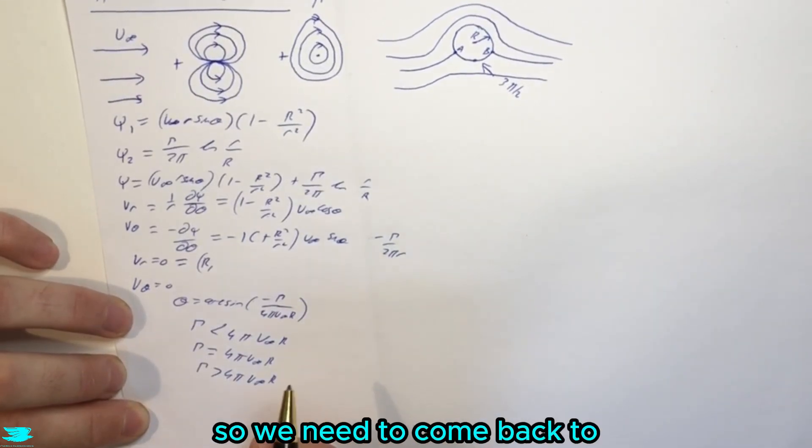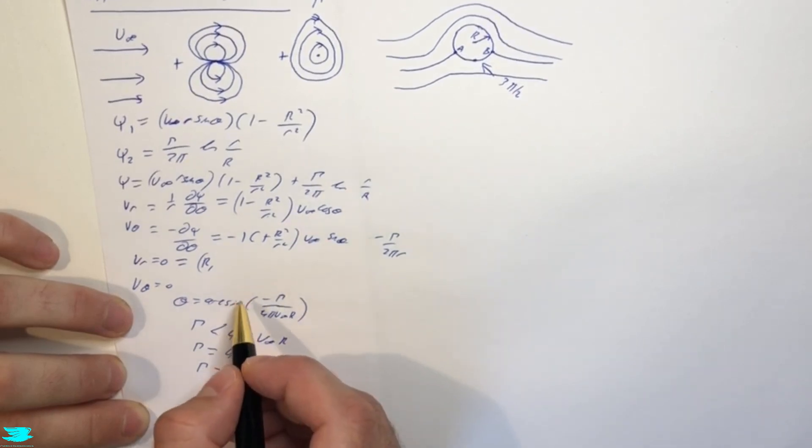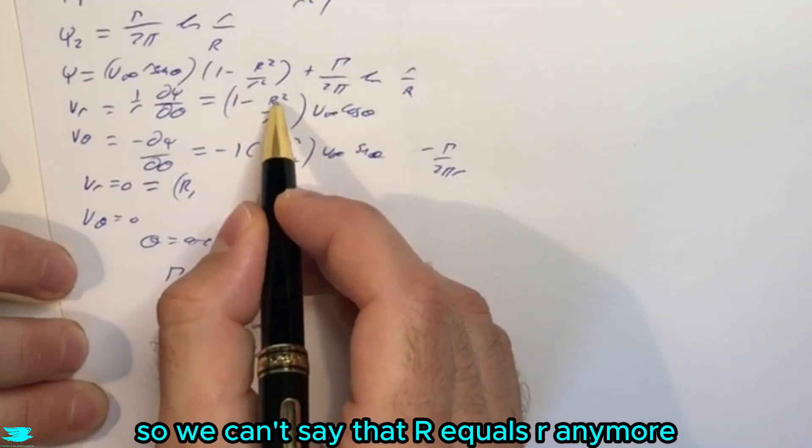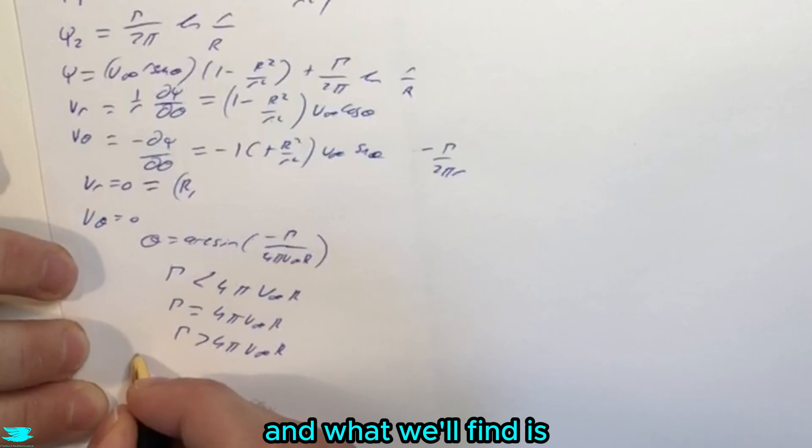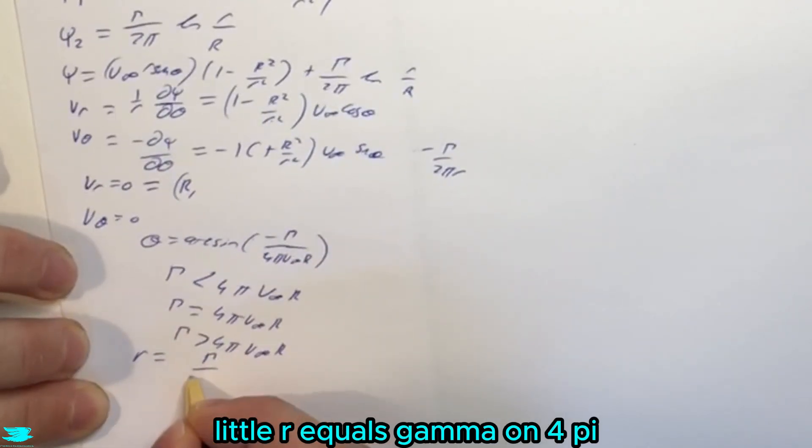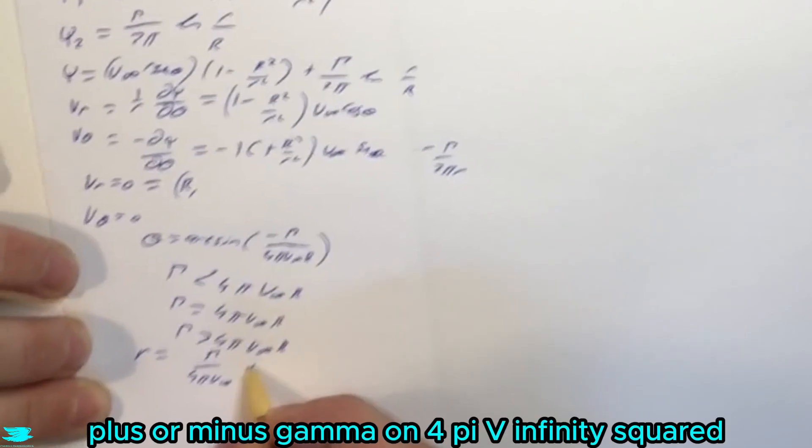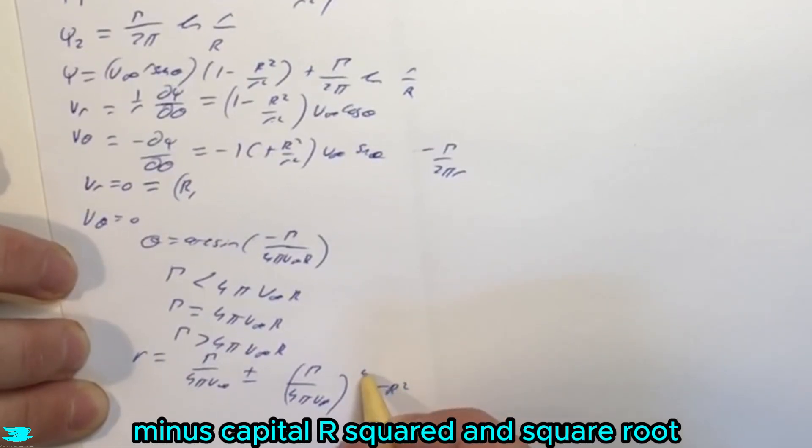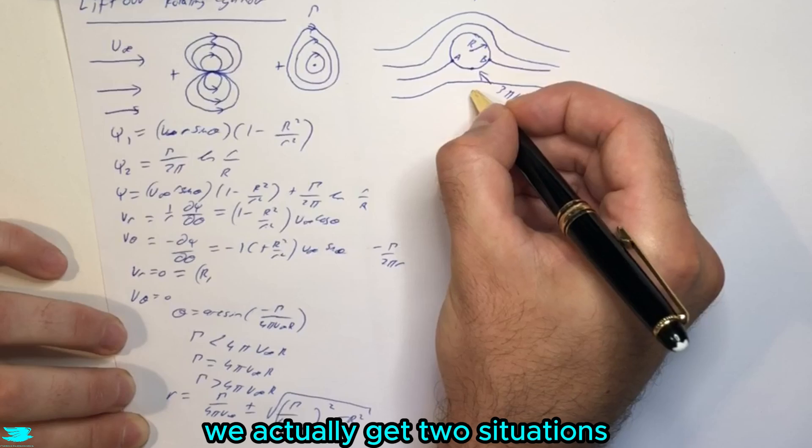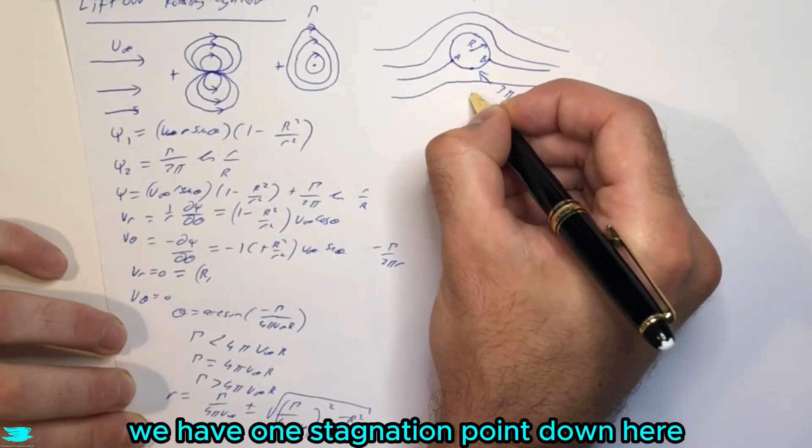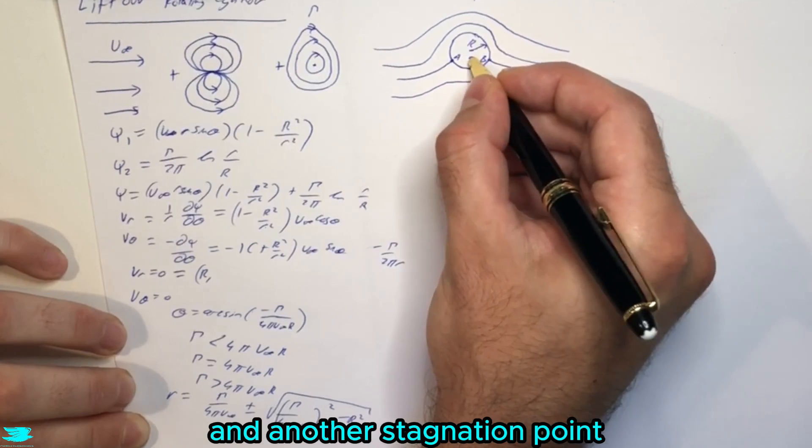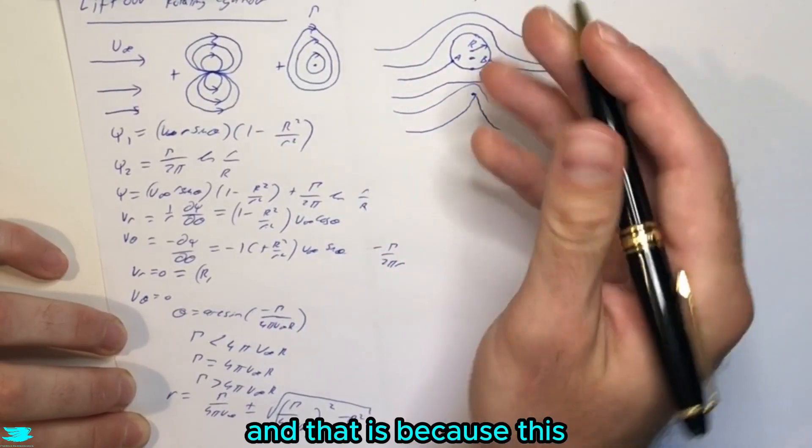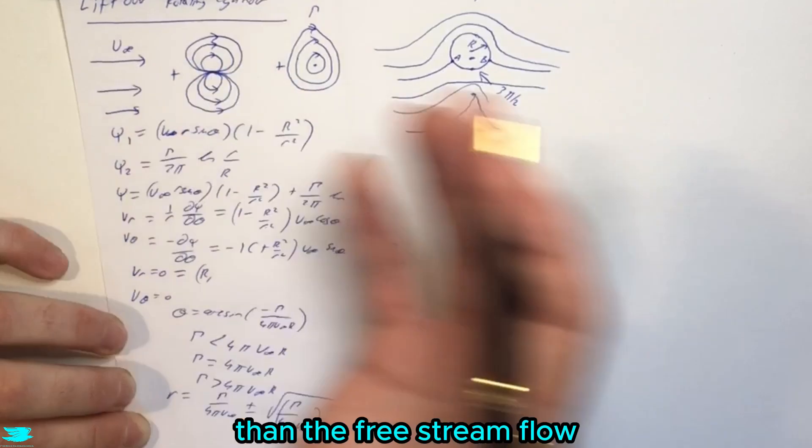But now what about if gamma is greater than 4 pi v infinity R? Now we get quite an interesting thing happening. So we need to come back to the v theta here and v R, and sub in minus pi on 2 into this equation and rearrange for R. So we can't actually say that R equals R anymore because that doesn't exist anywhere on this cylinder. And what we'll find is little r equals gamma on 4 pi v infinity plus or minus gamma on 4 pi v infinity squared minus capital R squared and square root of all of this. And what we find is now we actually get two situations. They're both in line with 3 pi on 2. We have one stagnation point down here and another stagnation point somewhere in the solid. So the flow will actually come up, hit this point, come down, and the rest of the flow will go over it.